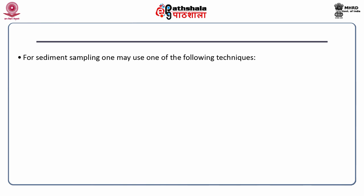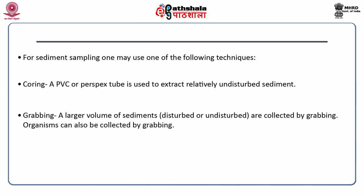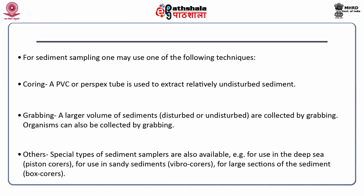For sediment sampling, one may use coring — where a PVC or perspex tube is used to extract relatively undisturbed sediments — or grabbing, where a large volume of sediments, disturbed or undisturbed, are collected. Organisms can also be collected by grabbing. Special types of sediment samplers are also available; for example, piston corers for deep sea use, vibro corers for sandy sediments, and box corers for large sections of sediment.